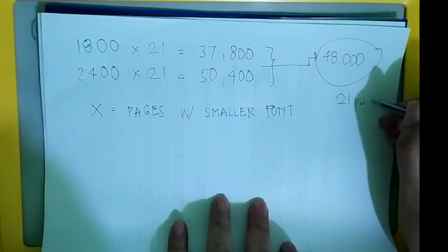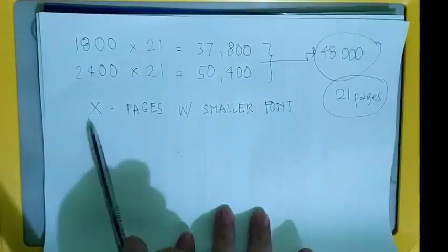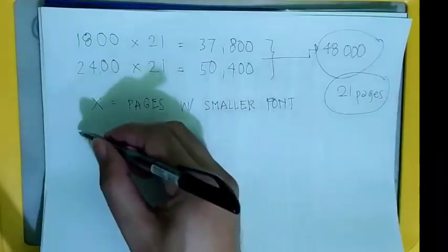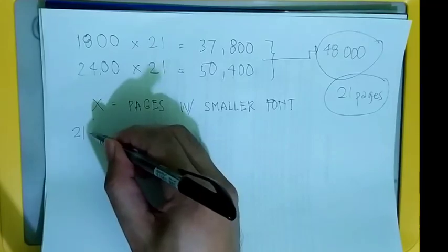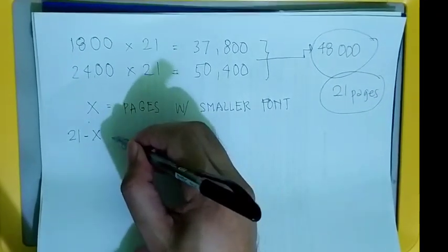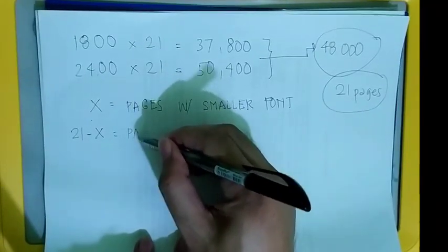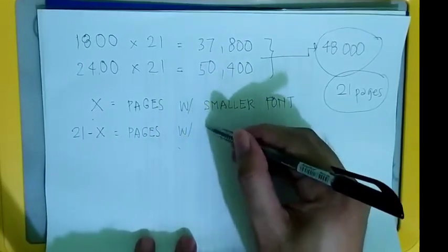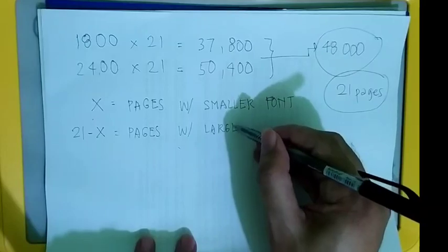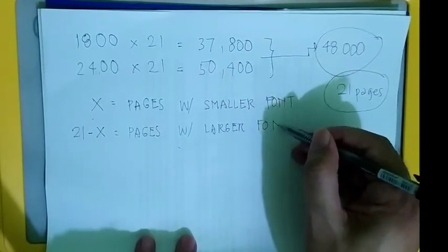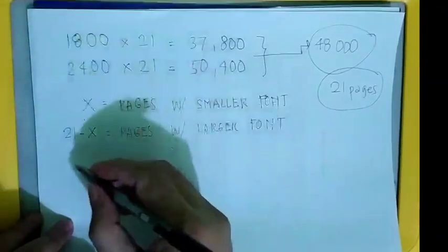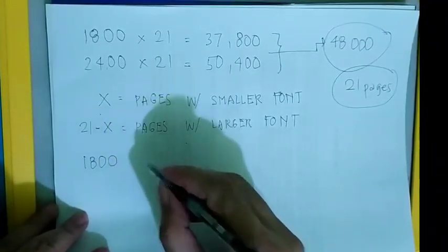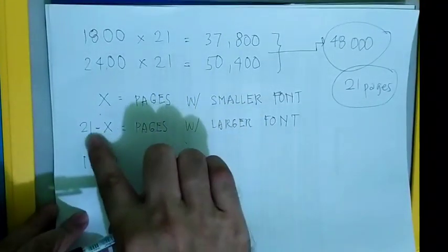Let x be the total number of pages with the smaller font. Therefore, 21 minus x is the number of pages with the larger font. The larger font gives 1,800 words per page over (21 minus x) pages.